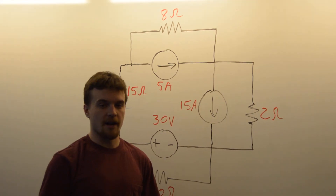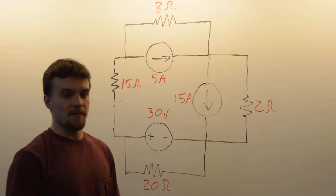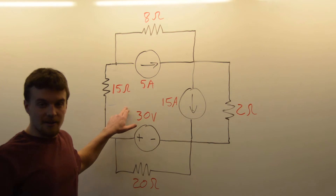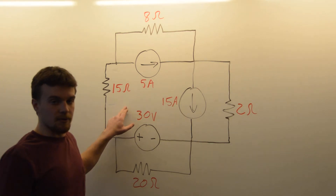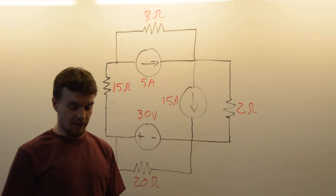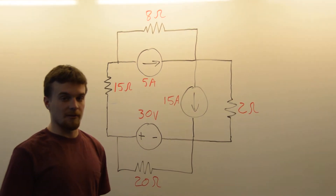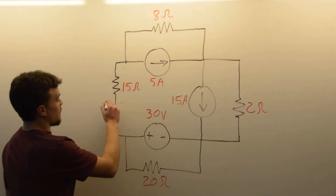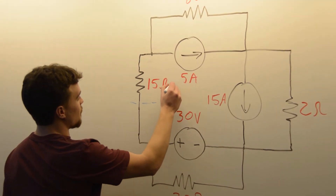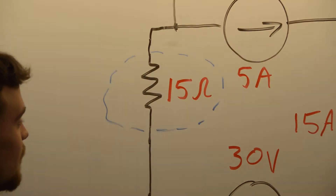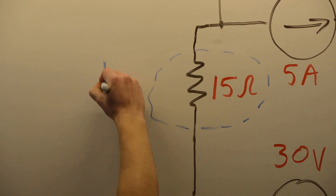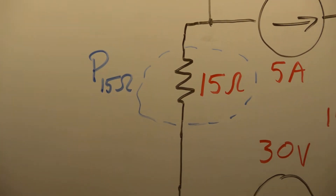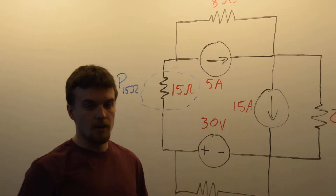Hi, I'm Zach from HKN, and we are going to solve this circuit using source transformations. Specifically, we want to solve for the power used by this resistor — power in the 15-ohm resistor.